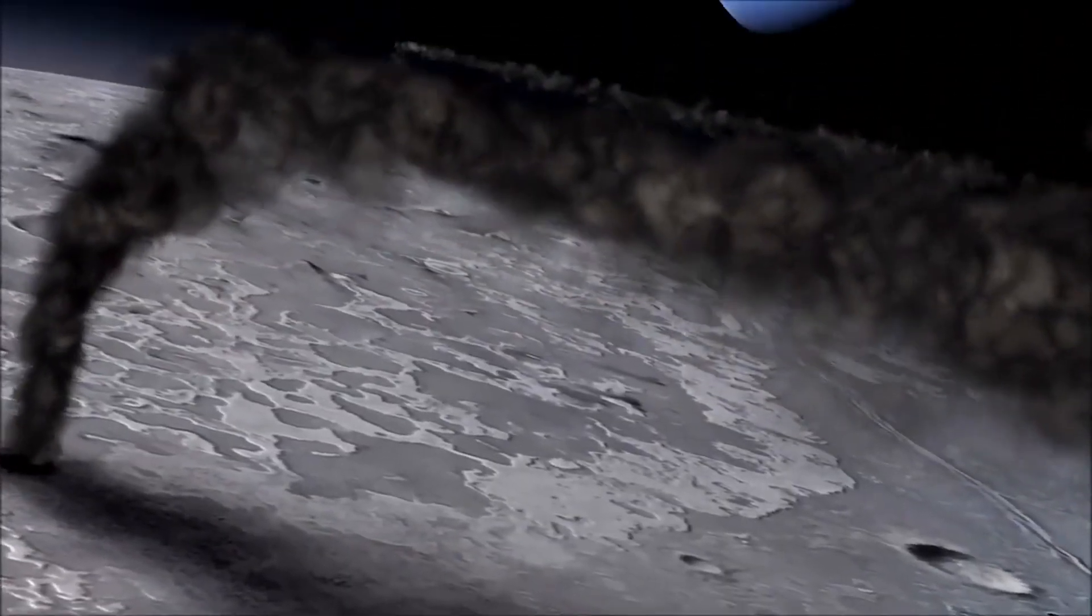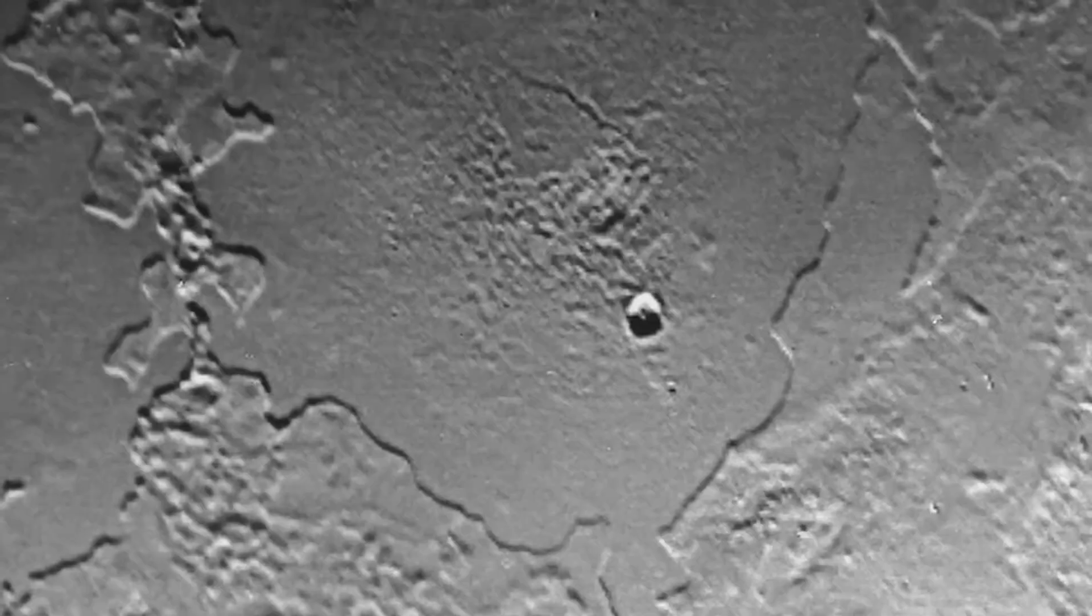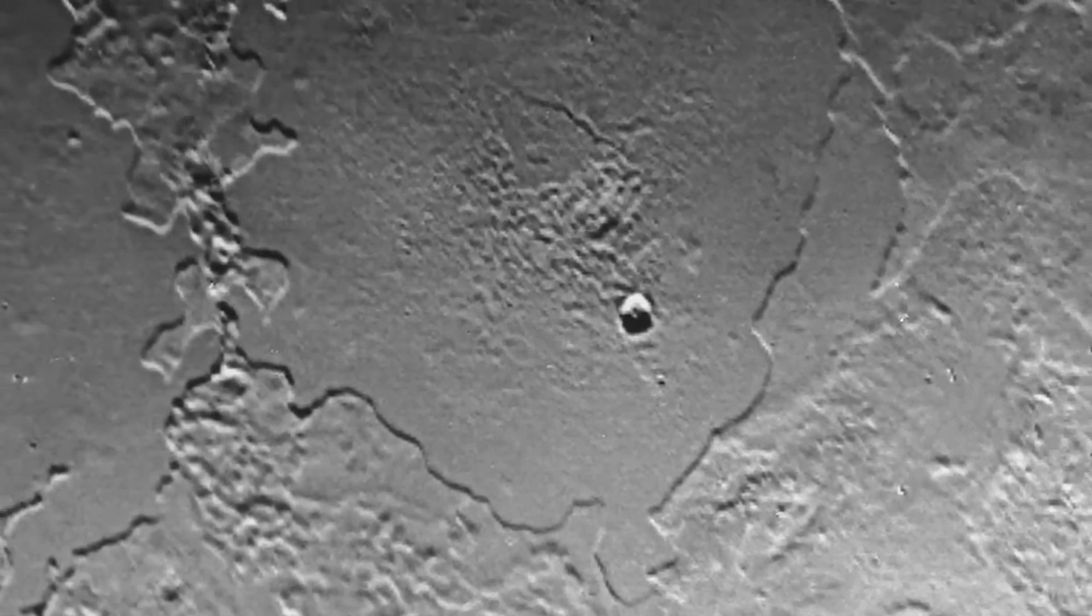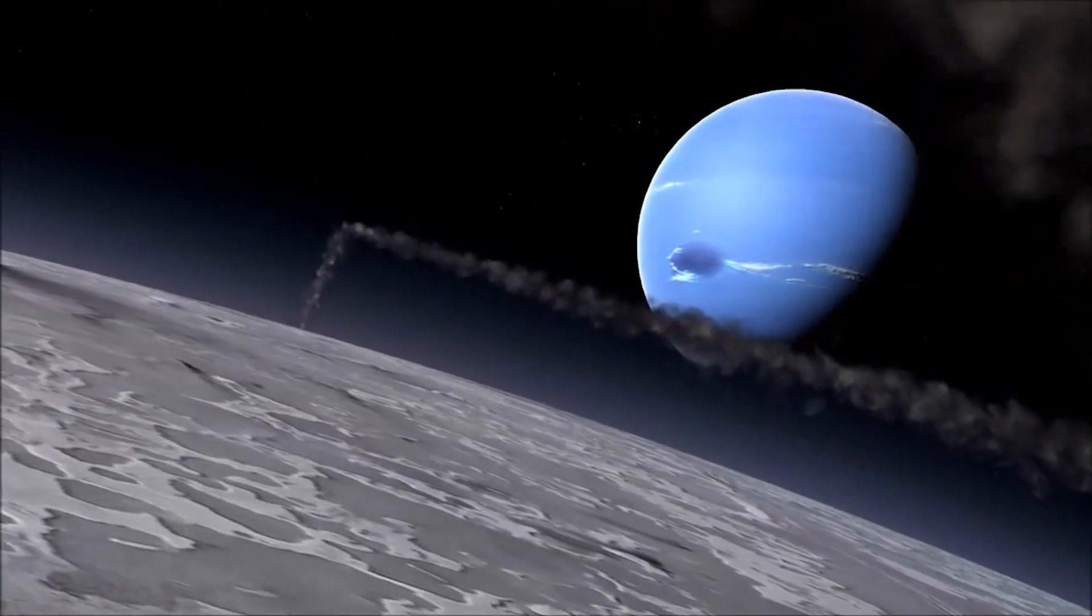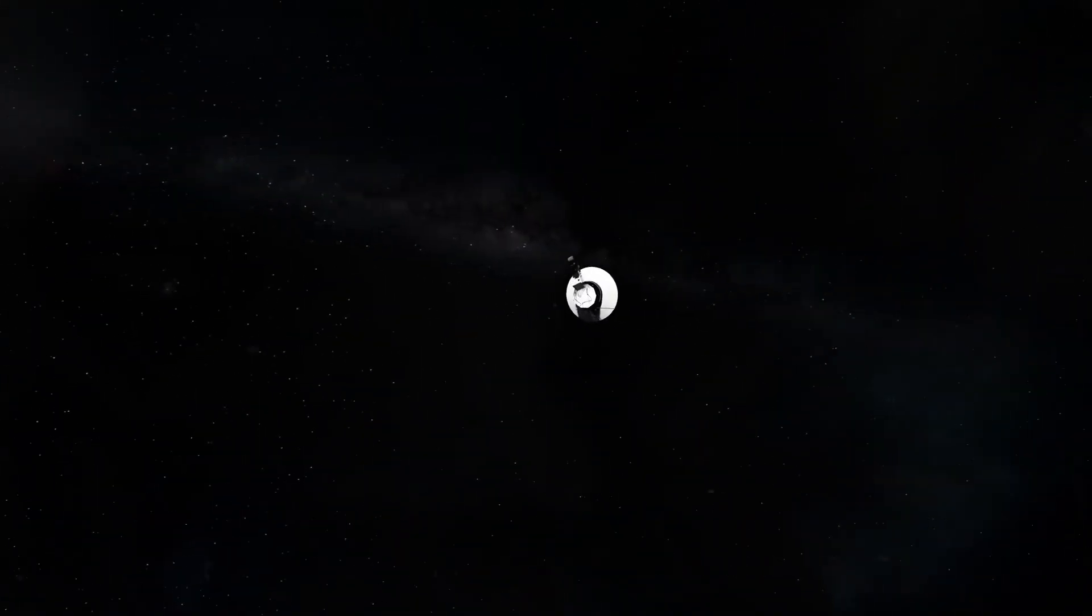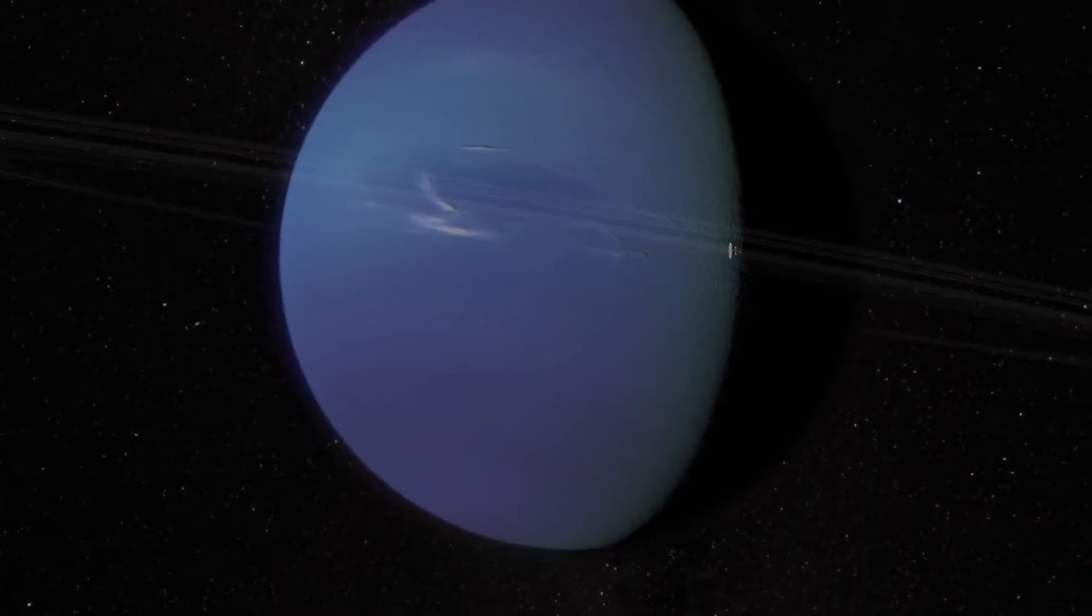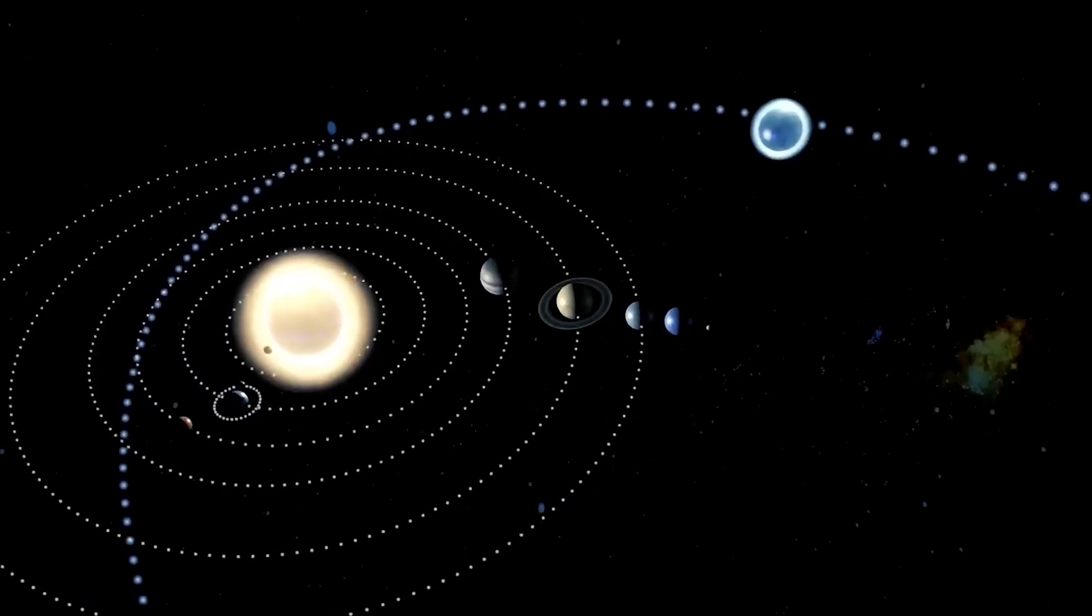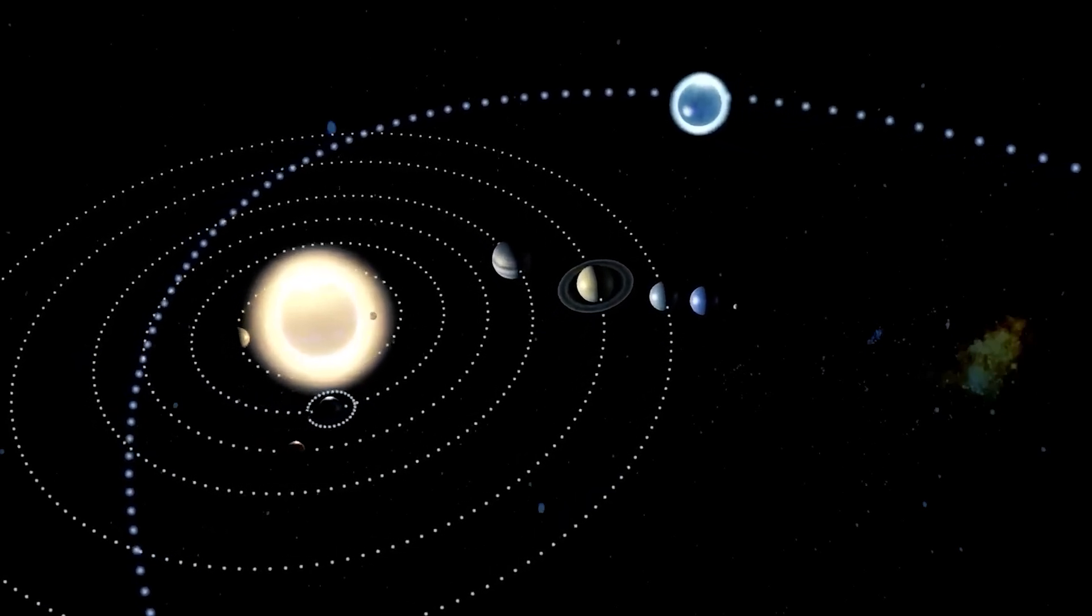Triton's unique features include ice volcanoes that expelled nitrogen gas and icy particles up to five miles into the thin atmosphere. These remarkable discoveries significantly expanded our understanding of the diversity and intricacy of celestial bodies within our solar system, even in its outermost regions.